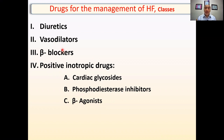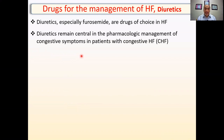Have you ever seen agonists and antagonists used for the same disease? We'll see how this could happen. Starting with the diuretics: they are the drugs of choice in heart failure, a very preferred class. They remain central in the pharmacologic management of congestive symptoms in patients with congestive heart failure, because they decrease sodium and water retention and thereby decrease congestion.